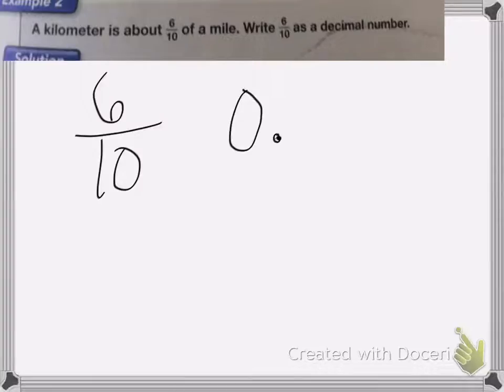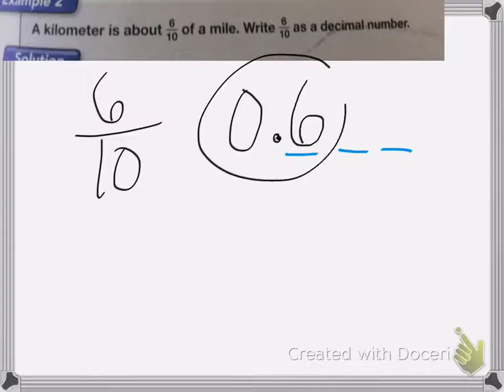You can put a zero in front if you wish, and we need to put the 6 in the tenths place. Remember we go tenths, hundredths, thousandths. So to put it in the tenths place, we're going to put the 6 in the first place value, the tenths, and that is your correct answer.